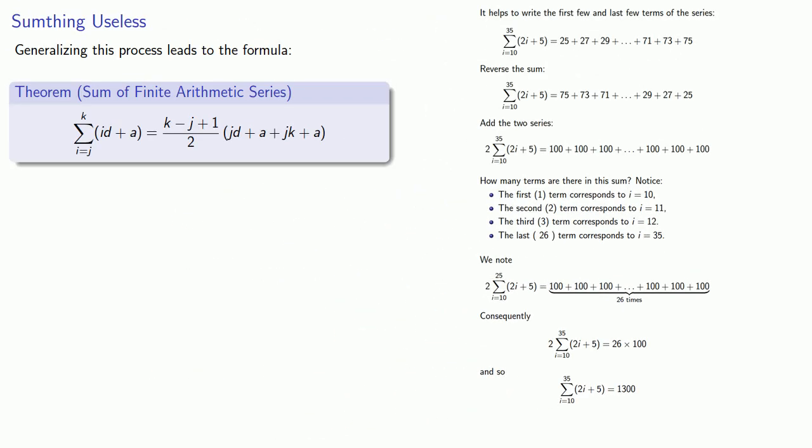If you do insist on memorizing a formula, here's a way to think about it. We added the first and last terms together. Then we multiplied by the number of terms we added. Which gave us twice the sum of the series. So we divided this product by 2.